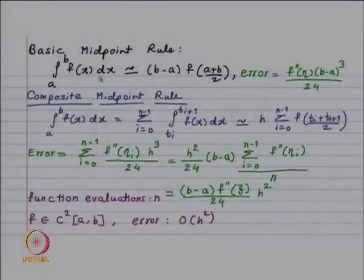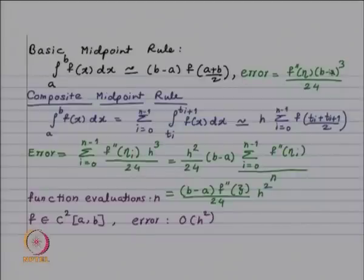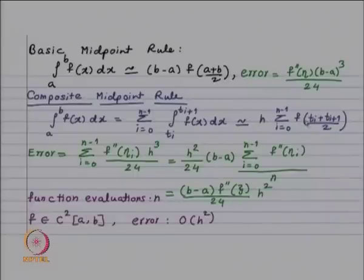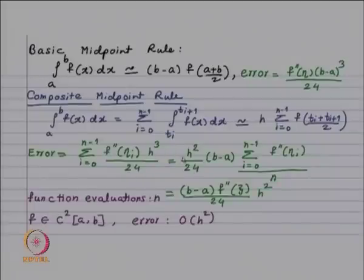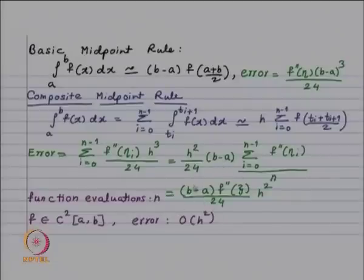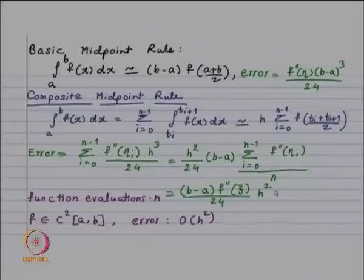For the composite midpoint rule: ∫_a^b f(x)dx ≈ ∑_{i=0}^{n−1} h·f((tᵢ+tᵢ₊₁)/2), with error ∑f''(ηᵢ)·h³/24. Associating one h with n gives: error = (b−a)/24·h²·f''(ψ), for some ψ. The function needs to be twice differentiable, and the error is of order h².